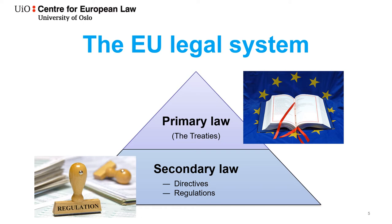Directives, on the other hand, are not directly applicable but have to be transposed into domestic law by domestic authorities. They are binding as to the result to be achieved, meaning that the provisions of a directive may give room for national adaptation. For example, a directive regulating a specific product may lay down minimum safety requirements so that each member state may choose whether or not to enact a stricter requirement. The modern tendency in EU law, though, is that more and more legislation is enacted through regulations rather than through directives.